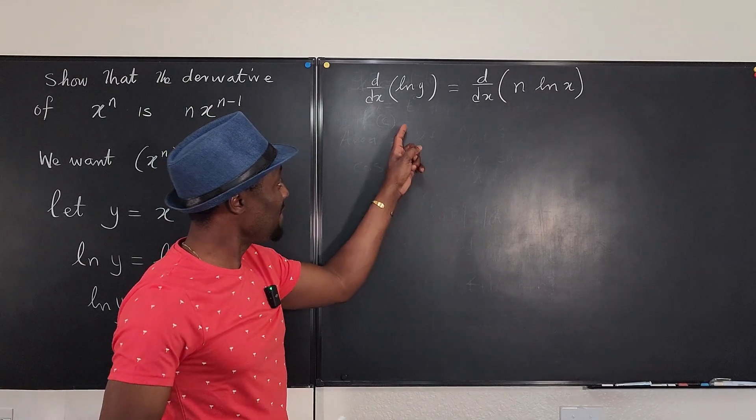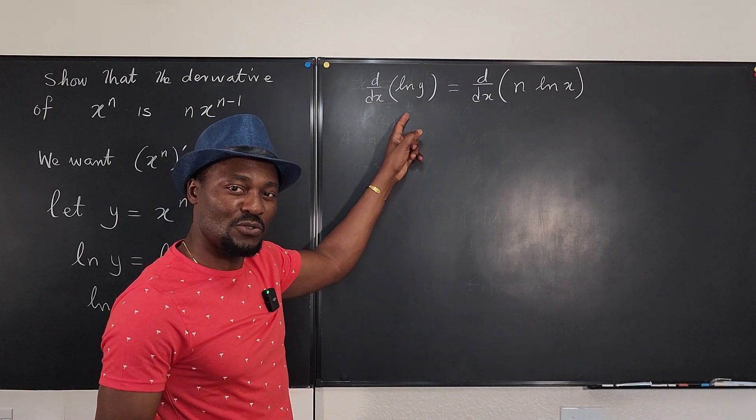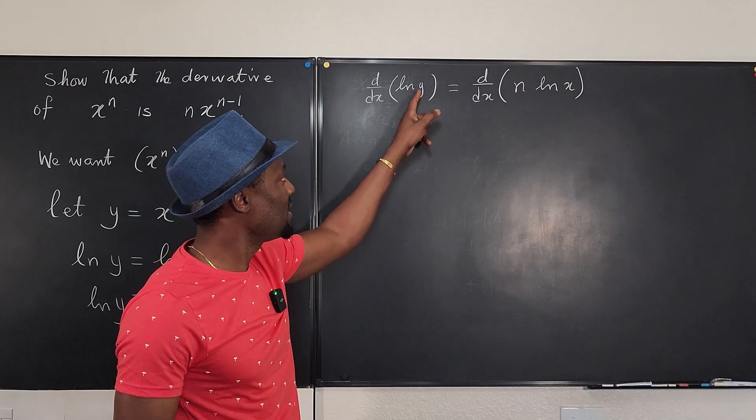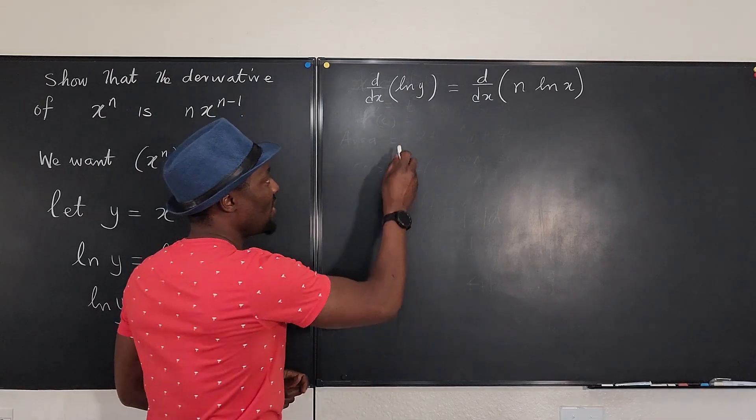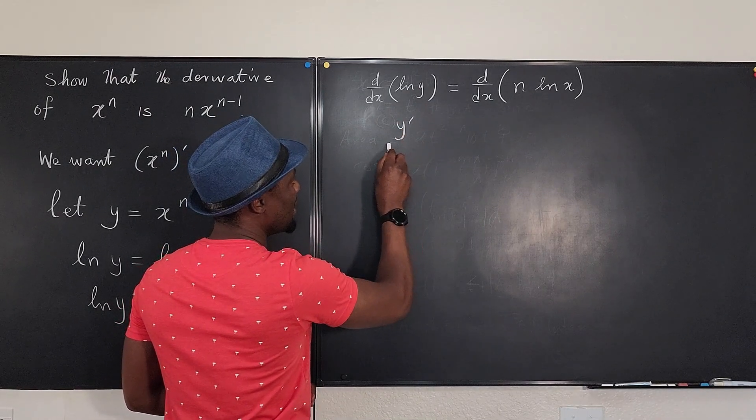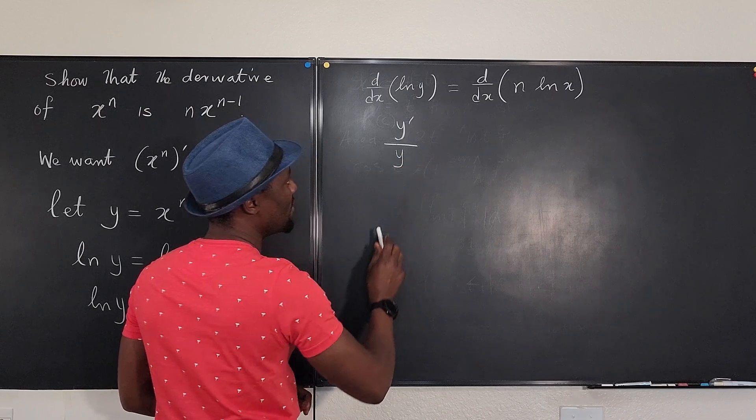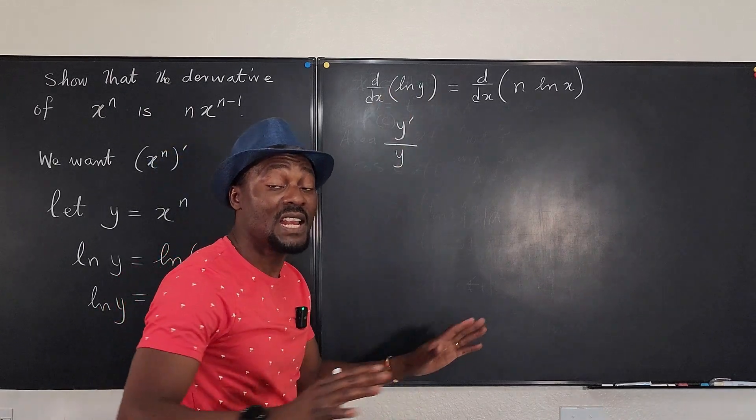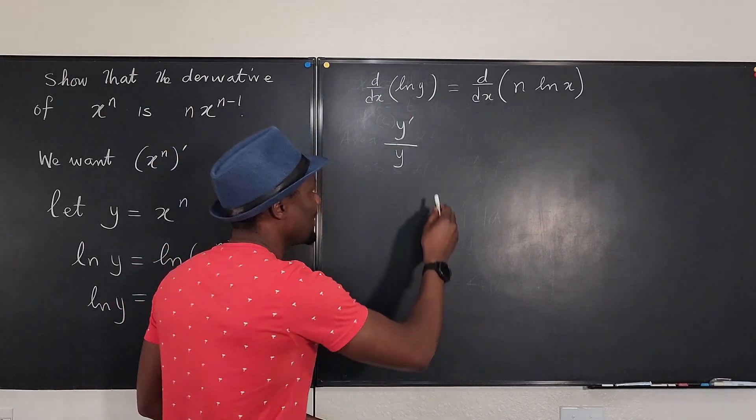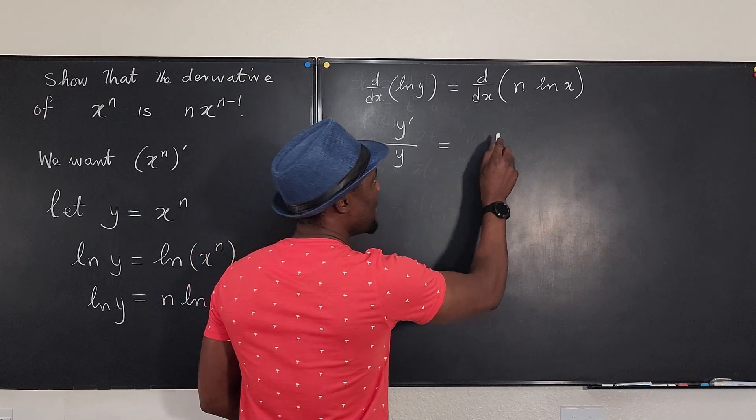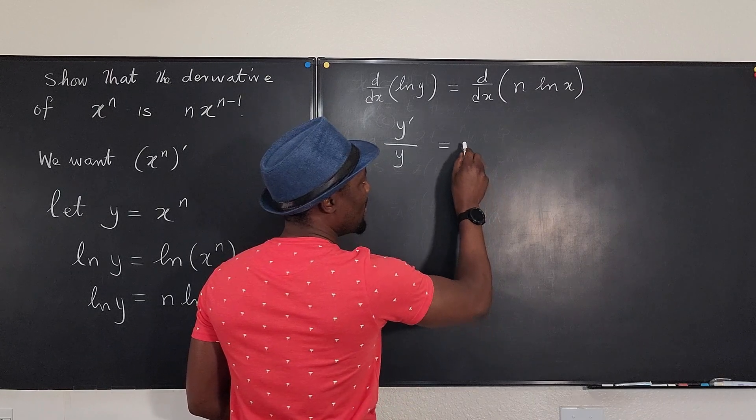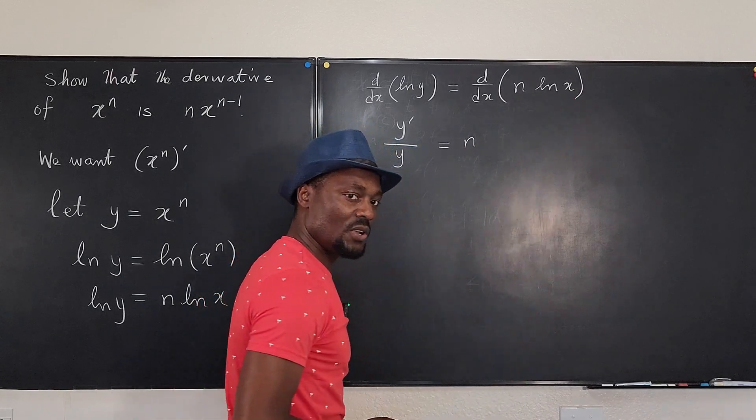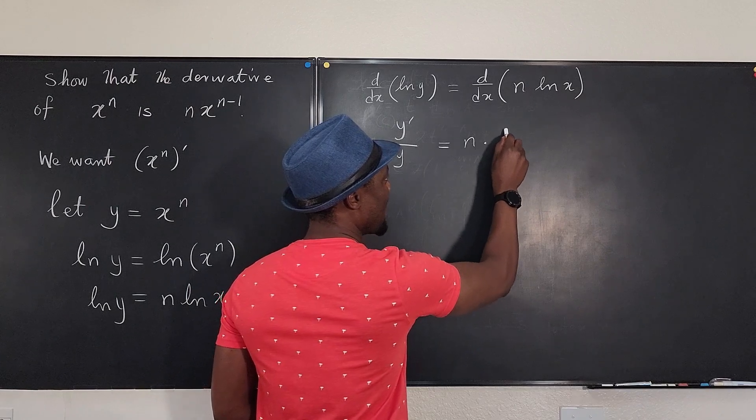So if I differentiate a natural log function, remember what I say: it's the derivative of the inside divided by the inside. So the derivative of the inside is y', divided by the inside, which is y. That's how you take the derivative of any natural log function. On the right-hand side, this is a constant—I'm differentiating with respect to x—so I can just keep the n. And what's the derivative of ln(x)? We know that it's 1/x.